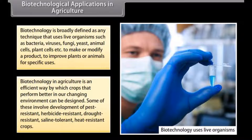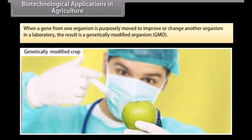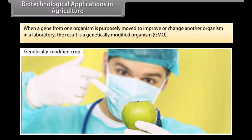Some of these developments involve pest-resistant, herbicide-resistant, drought-resistant, saline-tolerant, and heat-resistant crops. When a gene from one organism is purposely moved to improve or change another organism in a laboratory, the result is a genetically modified organism, or GMO.